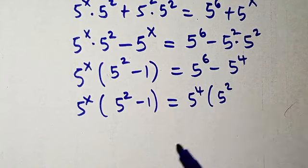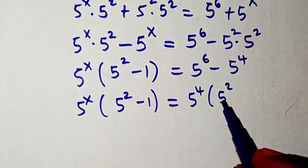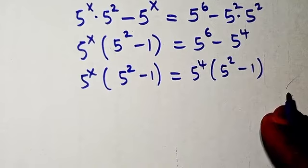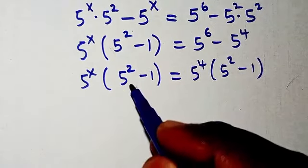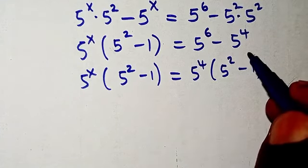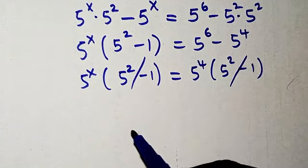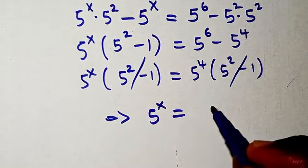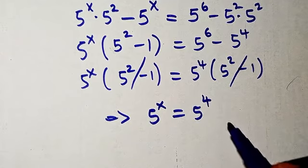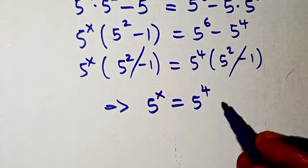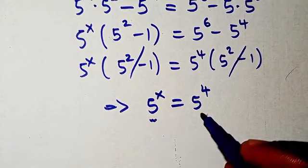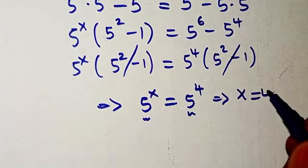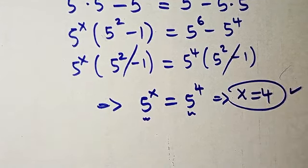Factorizing out 5 to power of 4, we have 5 to power of 2, so that multiplying gives 5 to power of 6, and the remaining term is 1. Now if we divide through by (5 squared minus 1), this cancels, and we're left with 5 to power of x equals 5 to power of 4. Since the bases are the same, x equals 4.